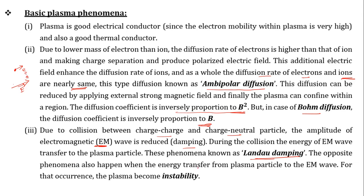The opposite phenomenon also occurs: when energy transfers from plasma particles to the electromagnetic wave, the wave amplitude increases instead of decreasing. This happens in the case of plasma instability — the plasma becomes unstable when energy transfers from plasma to the electromagnetic wave. Conversely, when energy transfers from the electromagnetic wave to the plasma, this is the stable Landau damping configuration.